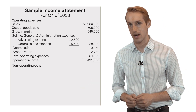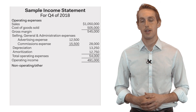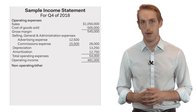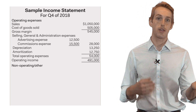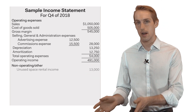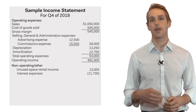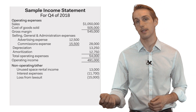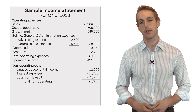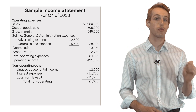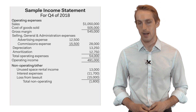Now let's jump into the non-operating section of the income statement. The non-operating section contains information that is not related to a company's primary business. For example, if a company rented out an unused portion of its manufacturing plant to another company, that would show up in the non-operating section. Additionally, things like interest expenses or other unusual or infrequent expenses would show up here. This is helpful because it helps you isolate the performance of a company's primary business line from any other unrelated activities that still ultimately affect net income.